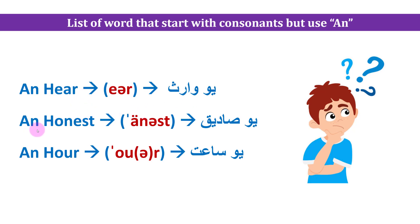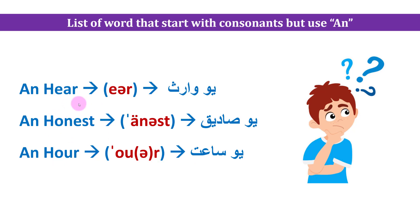An honest. An honest — because 'honest' starts with a vowel sound. An hour. An strange — these words begin with a silent consonant or vowel sound, so we use 'an'.